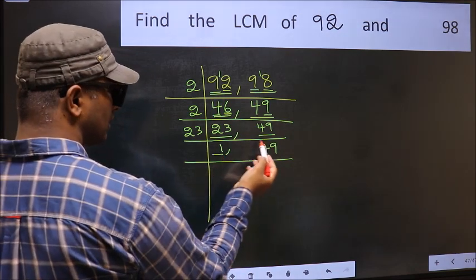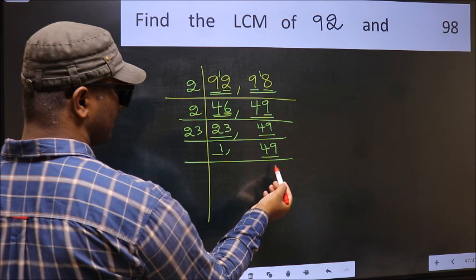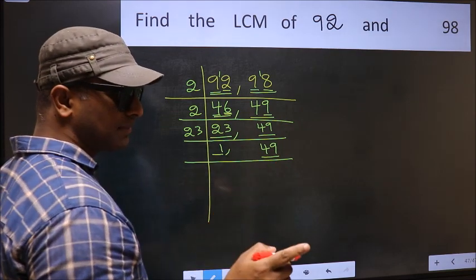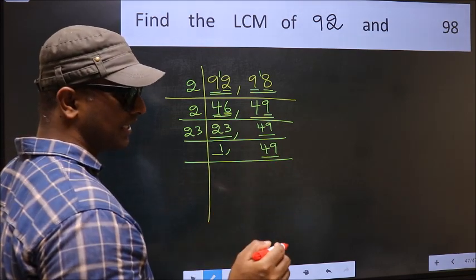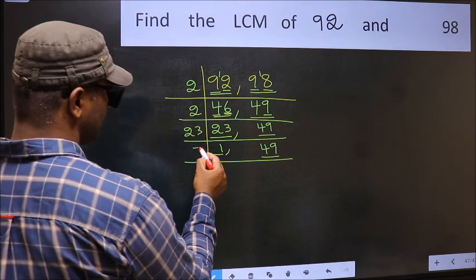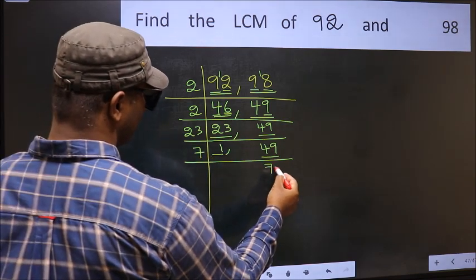Now we got 1 here, so focus on the next number 49. Always remember 7 into 7 is 49. That is 7 times 7 equals 49.